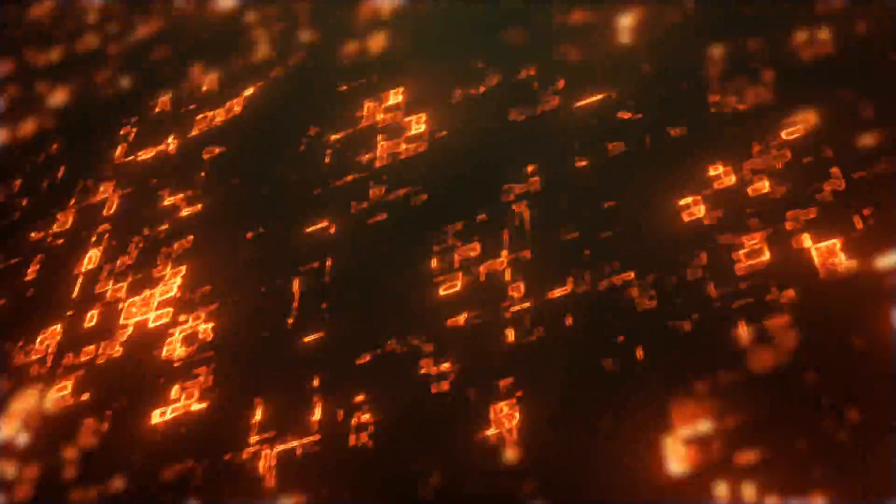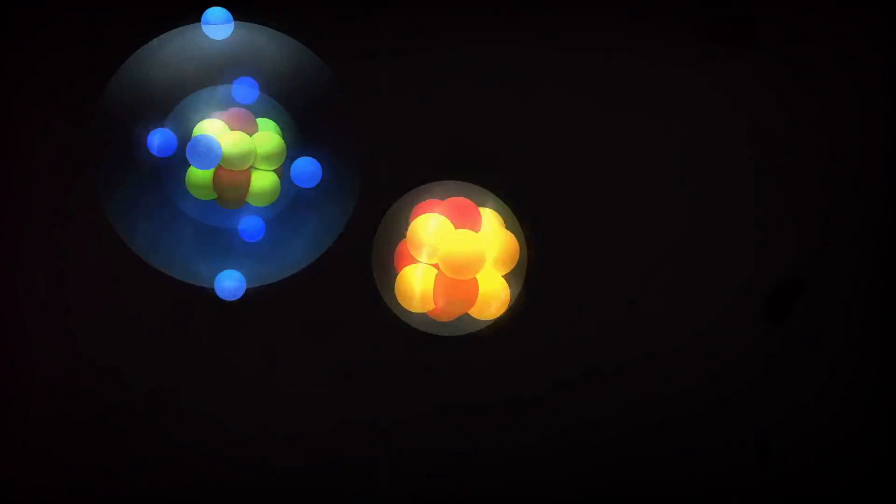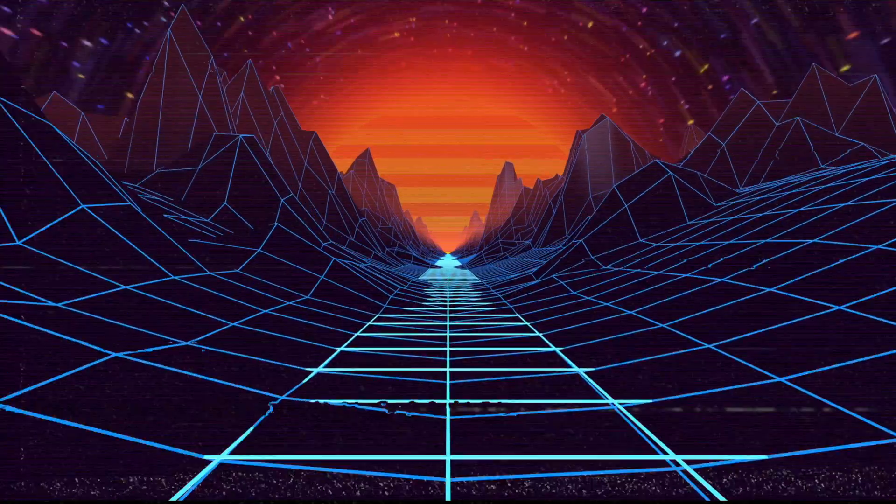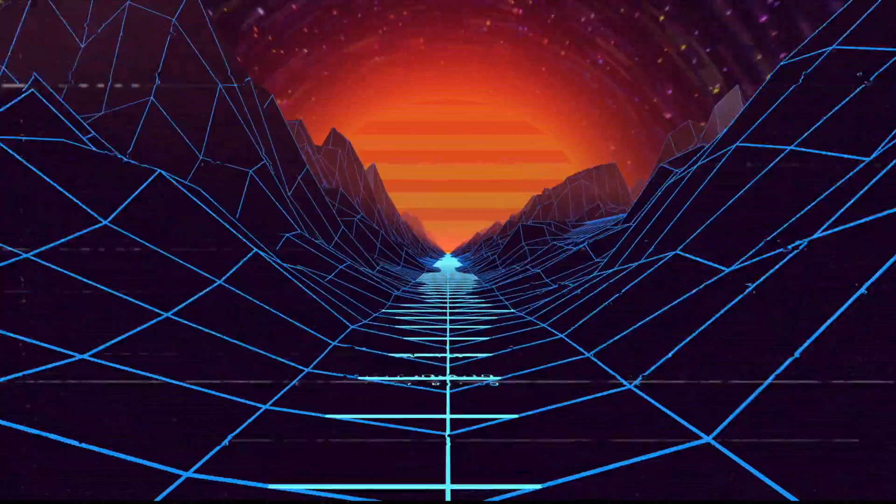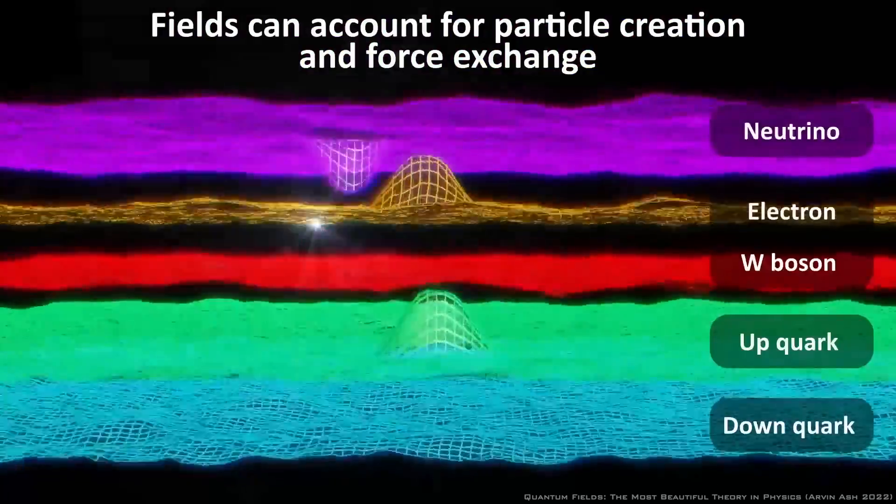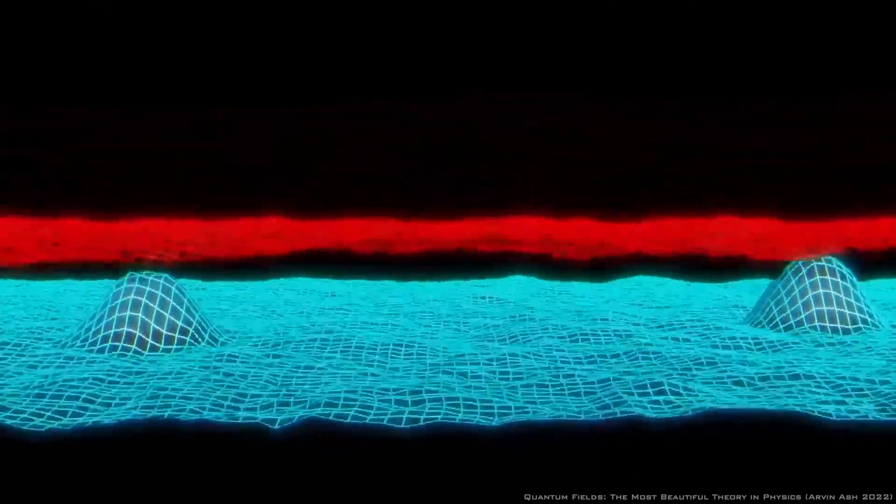Quick side note before we recap. When we first began researching this topic, we thought the turbulence of the quantum foam was what created fundamental particles, such as electrons and quarks. This is not the case. It's better to think of quantum foam as the volatile landscape where much larger particles like quarks and electrons can be created via transfers of energy between quantum fields.